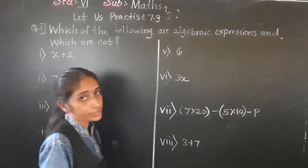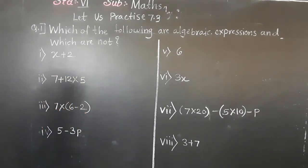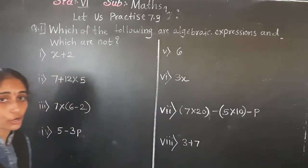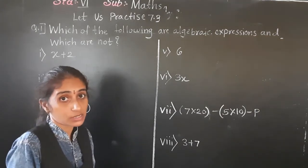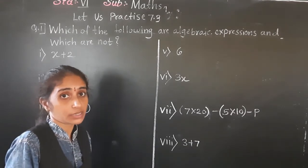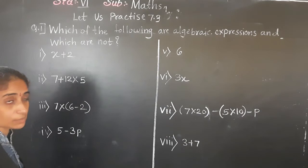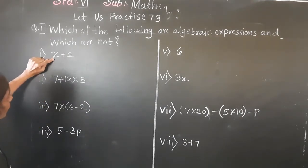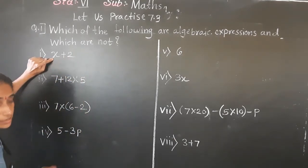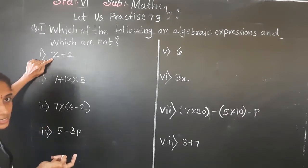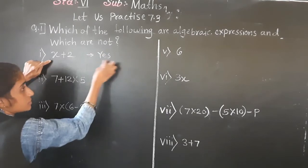Let's solve practice 7.3, question number 1: Which of the following are algebraic expressions and which are not? An algebraic expression is a combination of constant and variable with basic mathematical operations. The first example has a variable, a constant, and addition — so it is an algebraic expression.